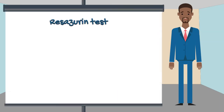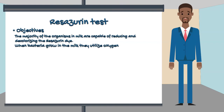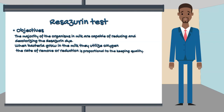Objectives of the Resazurin test: The majority of organisms in milk are capable of reducing and decolorizing the Resazurin dye. When bacteria grow in milk they utilize oxygen, and the rate of reduction is proportional to the keeping quality of milk.